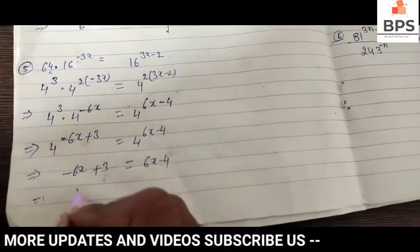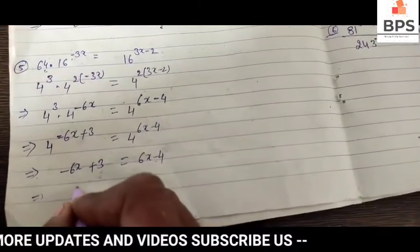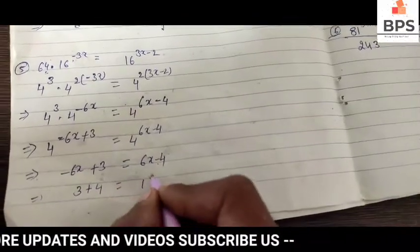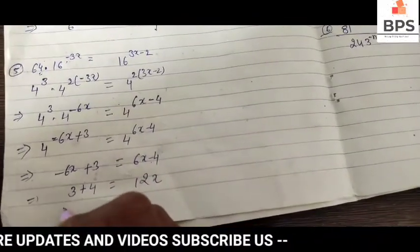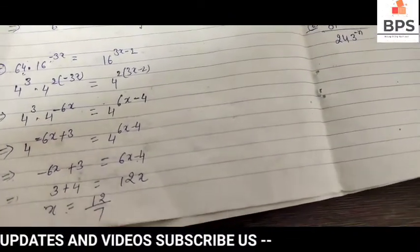Moving the x terms to one side, we get 3 plus 4 equals 12x. Therefore, x equals 12 by 7.